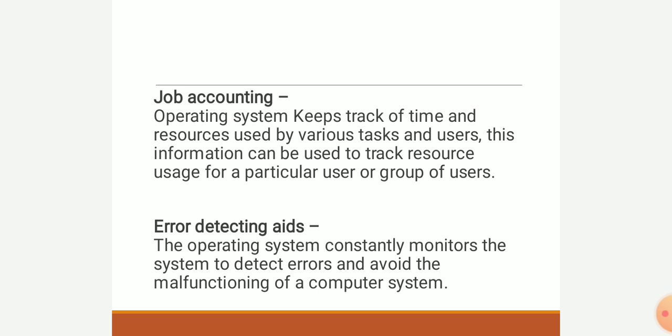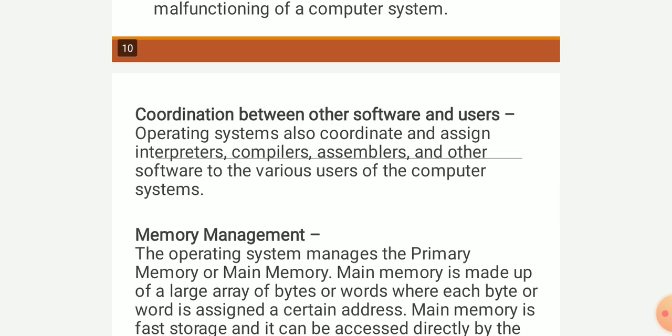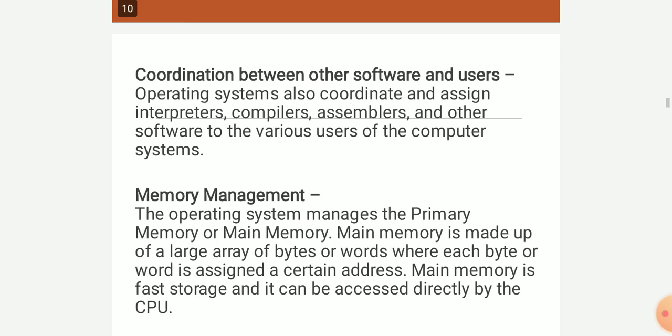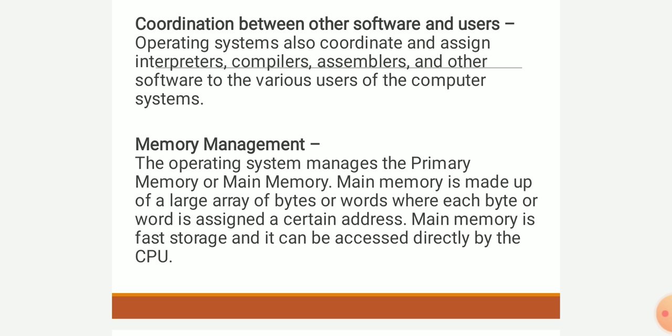Error detection: the operating system constantly monitors the system to detect errors and avoid malfunctioning of the computer system. Coordination between software and users: the operating system coordinates and assigns interpreters, compilers, and other software to various users of the computer system. Memory management: the OS manages primary/main memory, which is made up of a large array of bytes and words, each assigned a certain address.